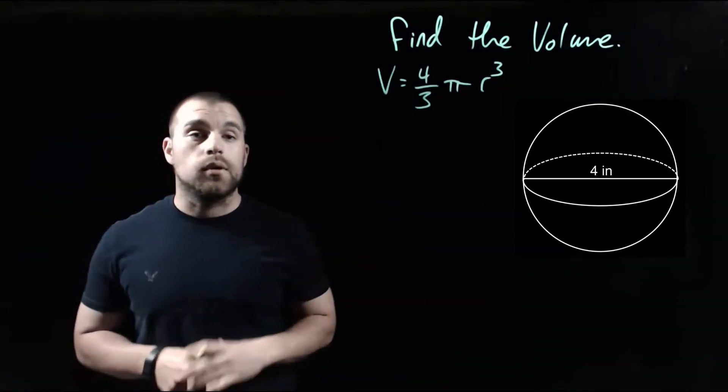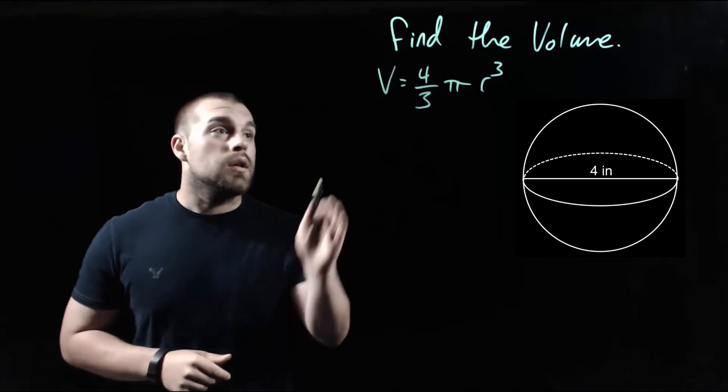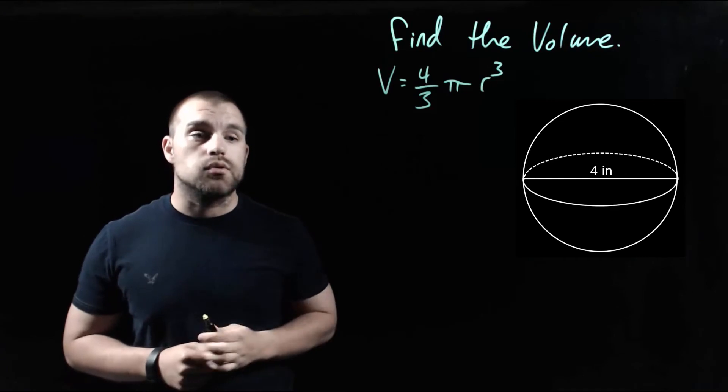Take a look at our next example. This time, our sphere has a diameter of 4 inches. In order to use our volume formula, we need the radius. So if we cut that 4 inches in half, we have a 2 inch radius.